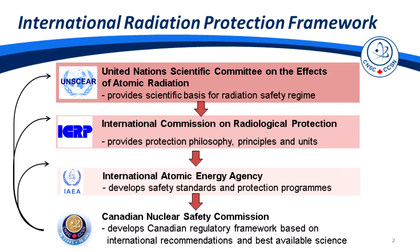First, the United Nations Scientific Committee on the Effects of Atomic Radiation, or UNSCEAR, provides the scientific basis for the radiation safety regime. Secondly, the International Commission on Radiological Protection, or ICRP, takes the information from UNSCEAR, the international scientific literature, and socioeconomic factors, and provides protection philosophy, principles, and units — often referred to collectively as the ICRP recommendations.